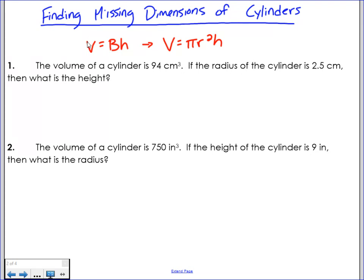So let's read the first problem. The volume of a cylinder is 94 centimeters cubed. If the radius of the cylinder is 2.5 centimeters, what is the height?